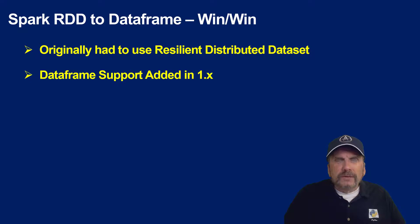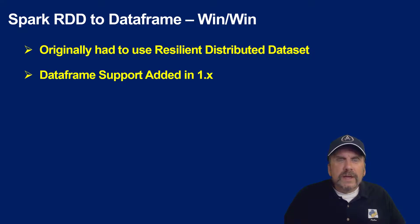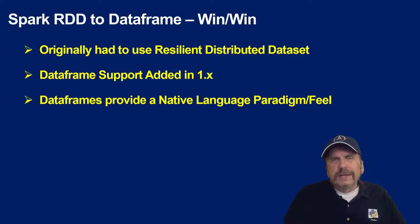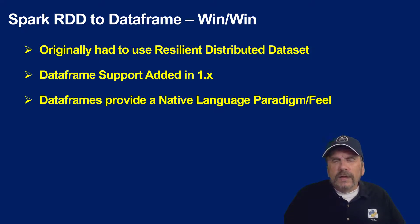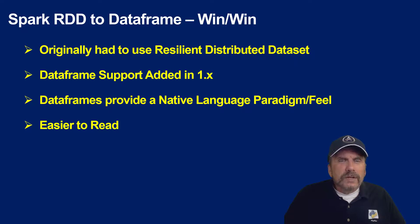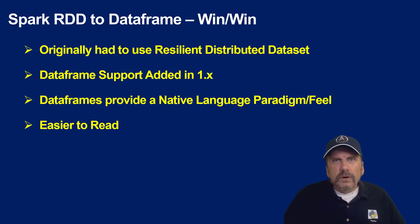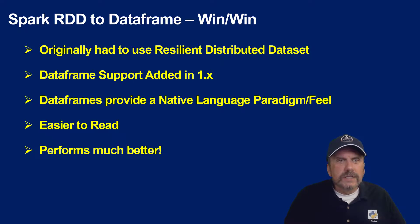The problem with RDDs is they're black boxes. They don't make it really easy to do things — they don't support the idea of treating data as tables. Data frames do, and data frame support like R data frames and pandas data frames, the idea of tabular data, was added in Spark version 1.x. That's available to everybody now. Data frames support a native language paradigm look and feel — if you've used pandas with Python you're going to feel very comfortable using Spark data frames. You'll be able to use similar methods and properties you're used to with pandas. Compared to RDDs, when using Spark data frames the code is really a lot more interpretable and easy to understand.